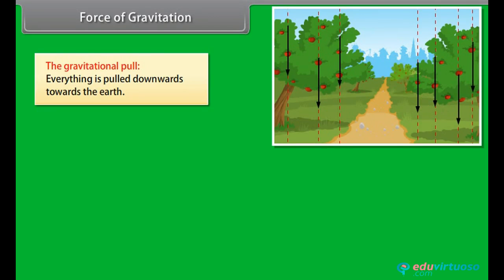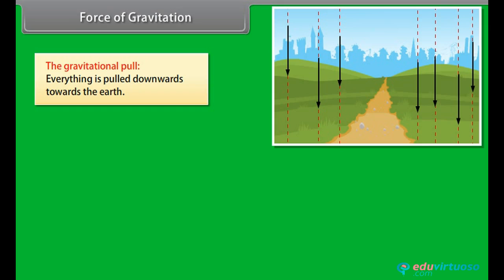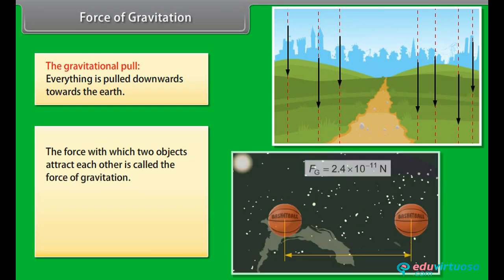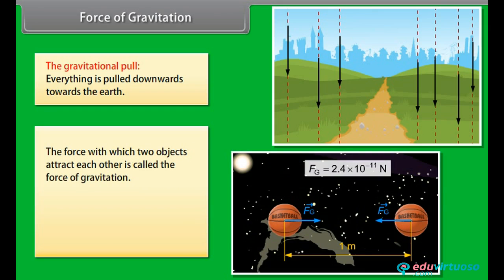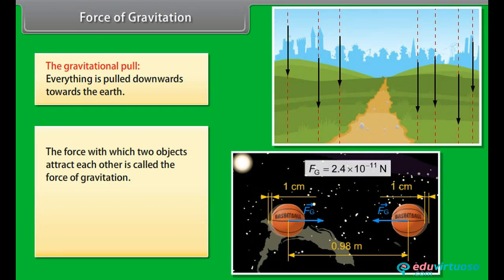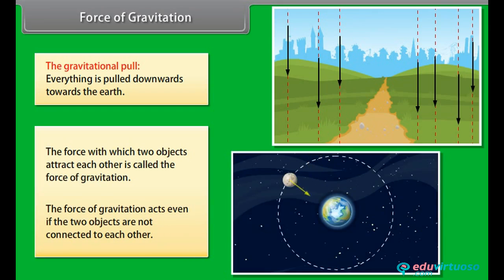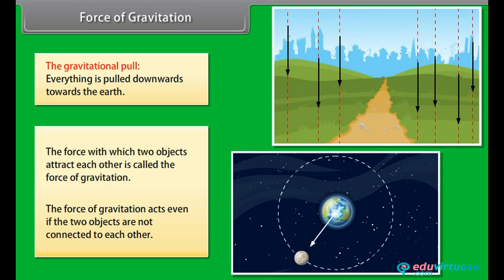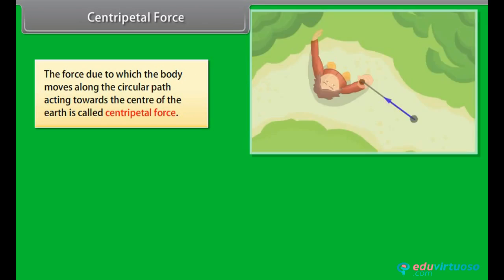Understand thrust and pressure, and understand the Archimedes principle. Force of gravitation: the gravitational pull pulls everything downwards towards the earth. The force with which two objects attract each other is called force of gravitation. The force of gravitation acts even if the two objects are not connected to each other.